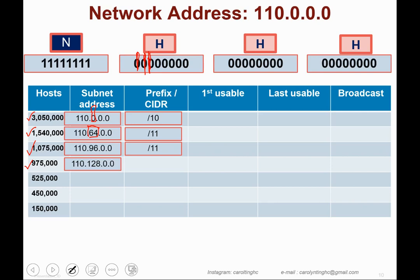For 975,000 hosts, the addressing table suggests slash 12. With slash 12 we have 12 ones, leaving 4 remaining host bits. Two to the power of 4 is 16. Adding 16 to 128 gives 144, so the next subnet address is 110.144.0.0.